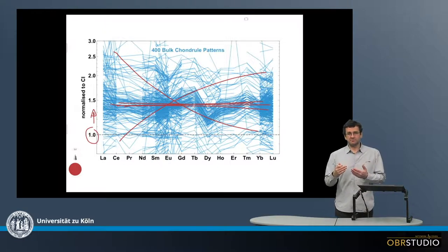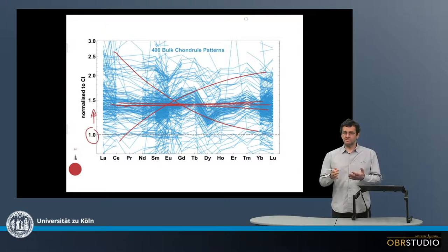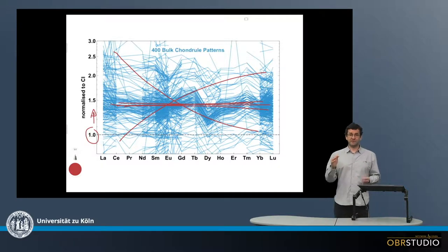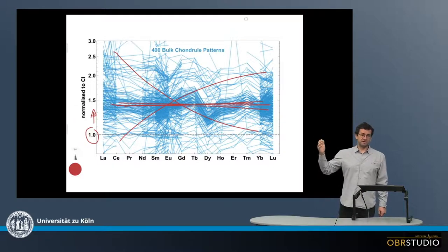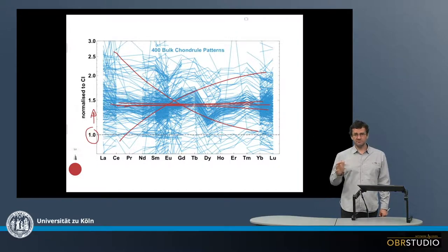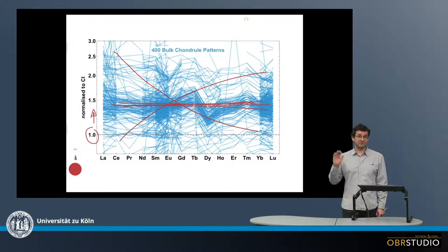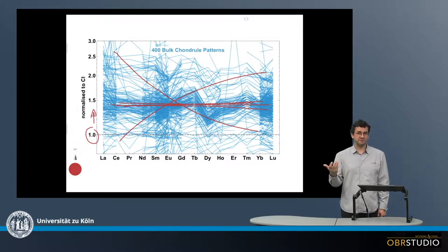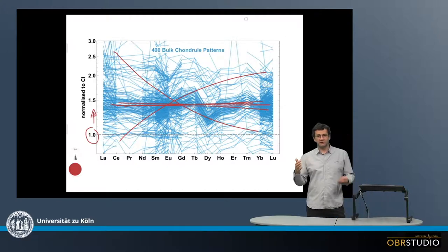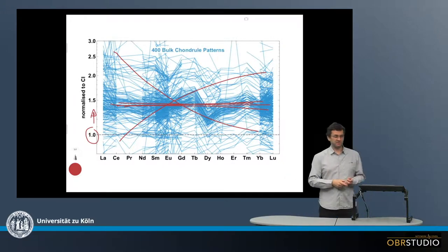Now, this slight enrichment most likely was not C-i's, because C-i's often have fractionated rare earth element patterns, and we might observe these patterns then also in the chondrules. Some chondrules have these kind of patterns, so we can observe these, but in general, we don't see it. So in general, the enrichment is not because C-i material was added to the chondrules, but because the precursors were slightly enriched in refractory elements, which makes sense because chondrules are high-temperature condensates.